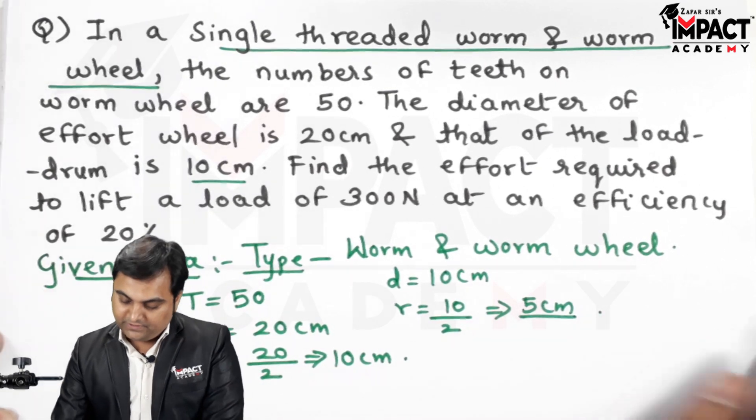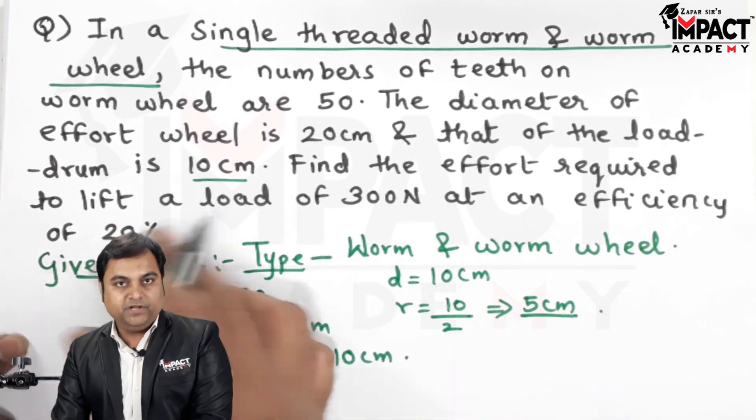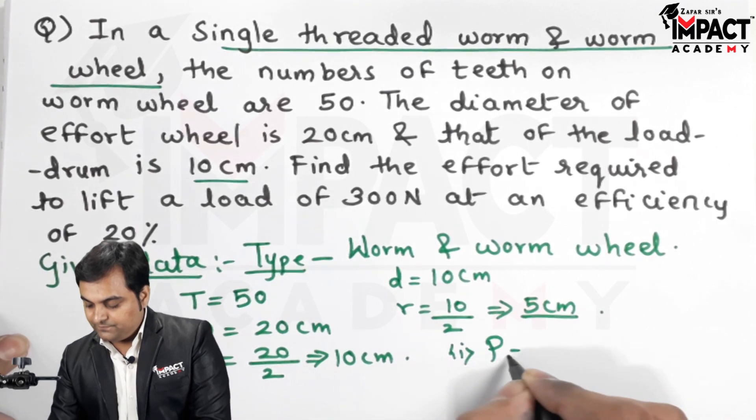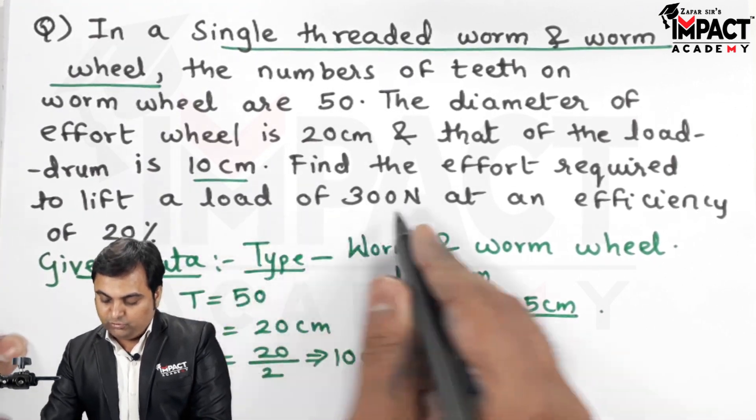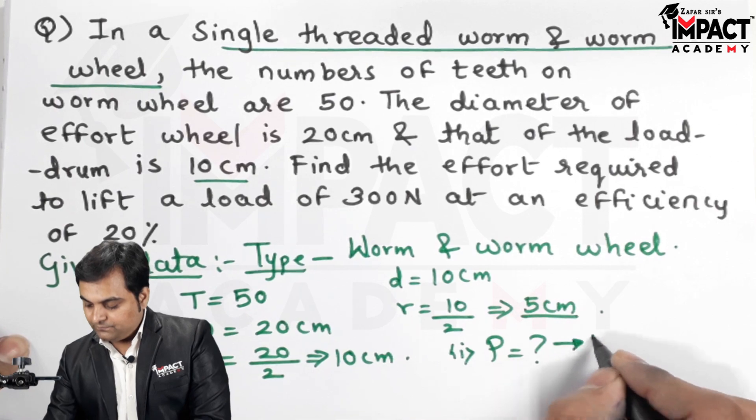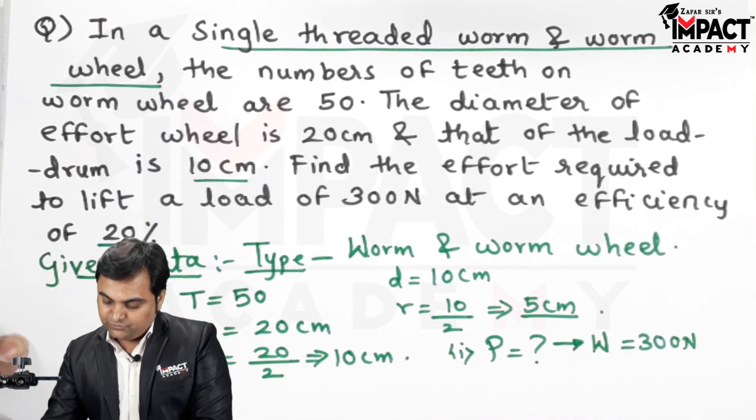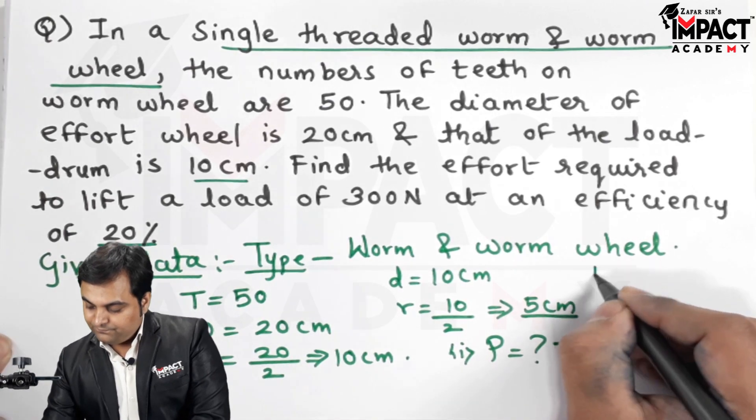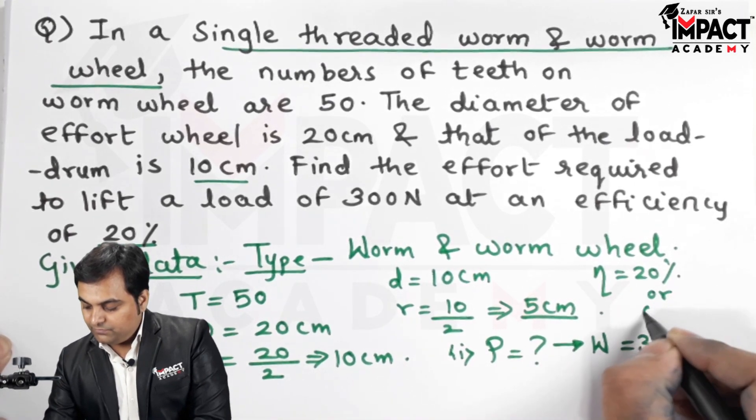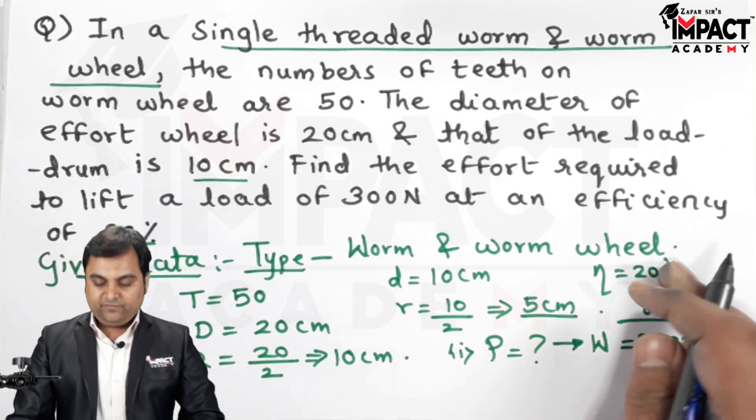Then find the effort required, so P has been asked to lift a load of 300 Newton at an efficiency of 20%. So the efficiency is given for this machine, 20%, so it means it is 0.2 if I divide this by hundred.